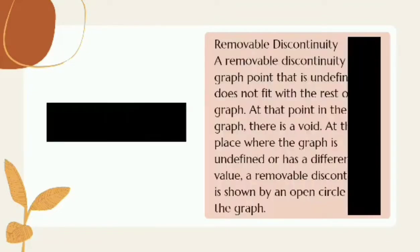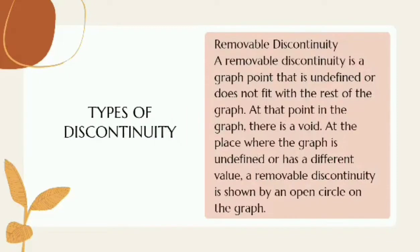The next one is removable discontinuity. A removable discontinuity is a graph point that is undefined or does not fit with the rest of the graph. At that point in the graph, there is a void where the graph is undefined or has a different value. A removable discontinuity is shown by an open circle on the graph.